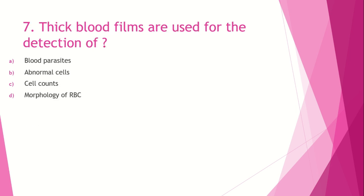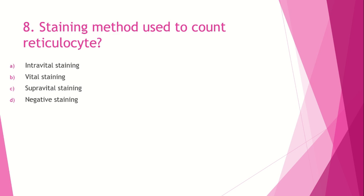Question number 7: Thick blood films are used for the detection of — option A, blood parasites; option B, abnormal cells; option C, cell counts; option D, morphology of RBCs. Thick blood films are used for demonstrating blood parasites like malaria and microfilaria. Cell counts and RBC morphology are evaluated using thin blood films, especially at the tail end.